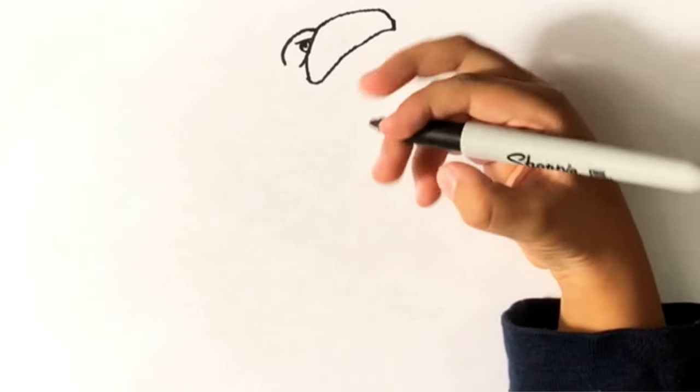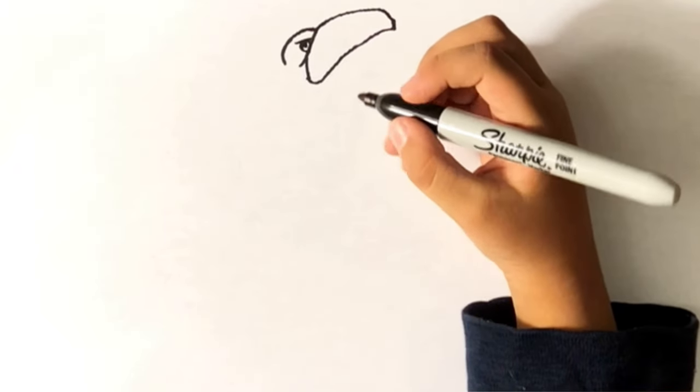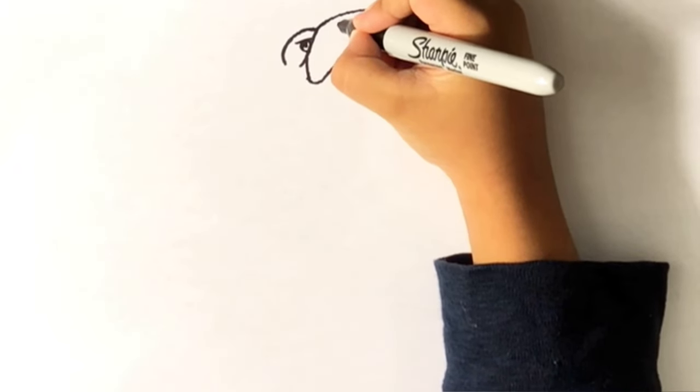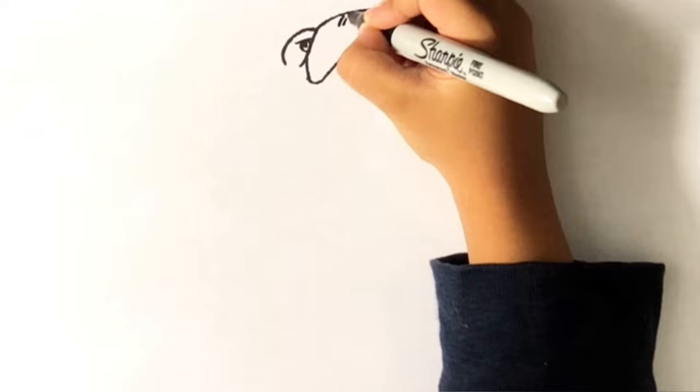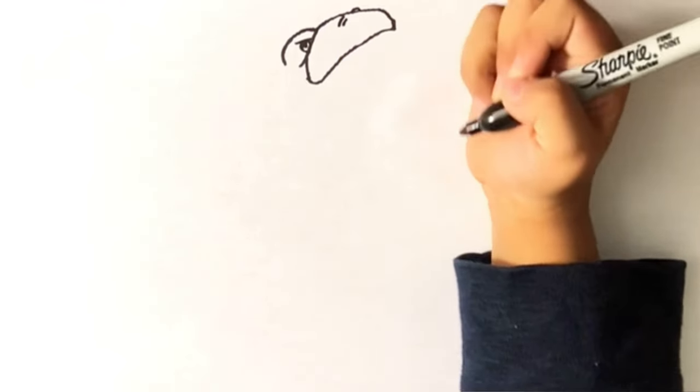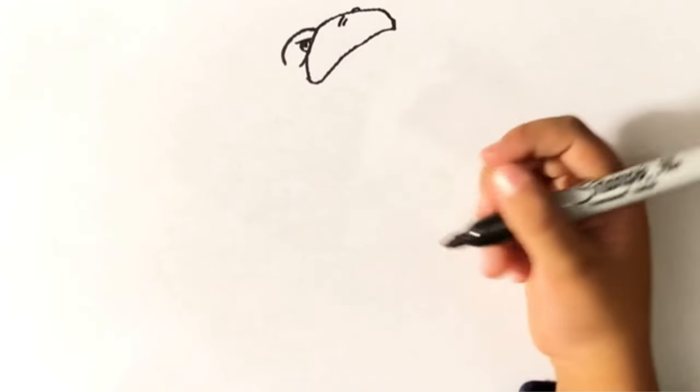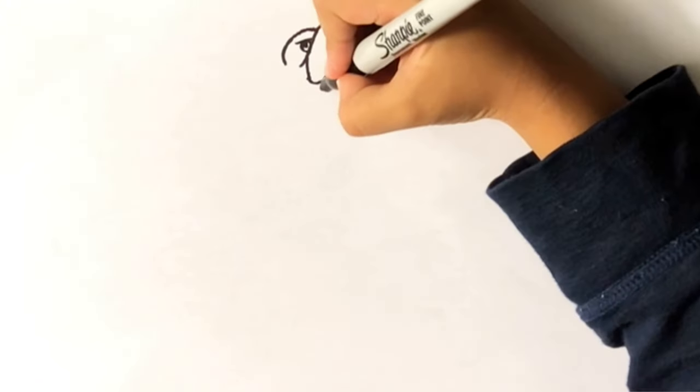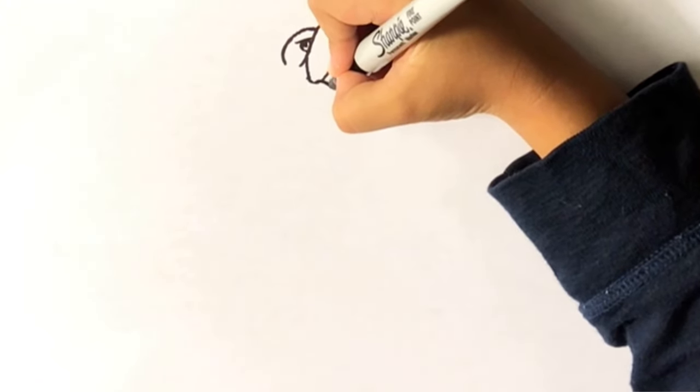But this is a Sharpie, so I'm just going to make two lines for his nostril and a tiny bump right there. Now let's make his jaw.